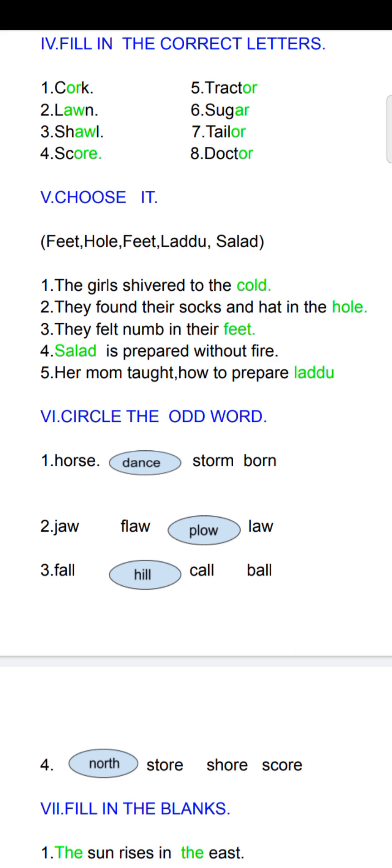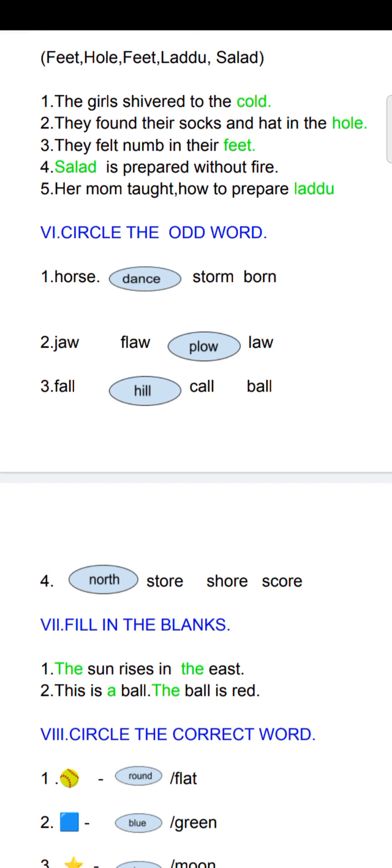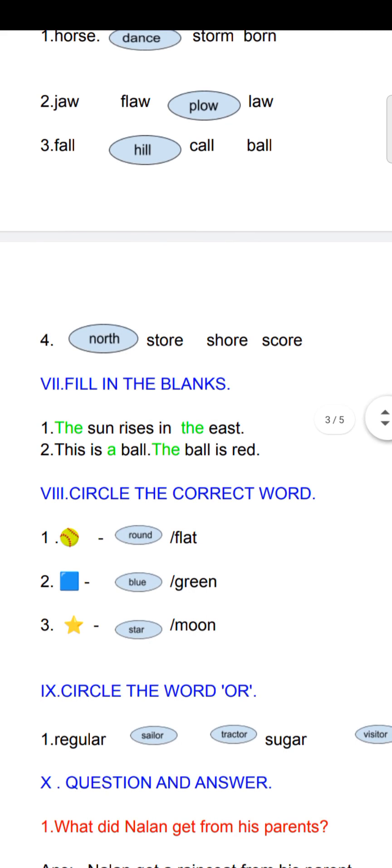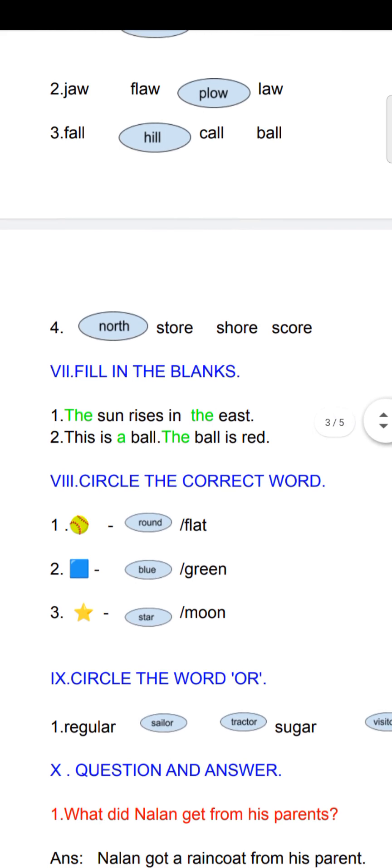Sixth, Roman: circle the odd word. Which one is different, you have to circle. First set: horse, storm, bon — dance is the different one, so circle it. Second set: jaw, flower, plow, la — plow, you have to circle. Third set: fall, hill, call, ball — hill, you have to circle; it is different. Fourth set: north, store, shore, score — north is the different one, circle it.